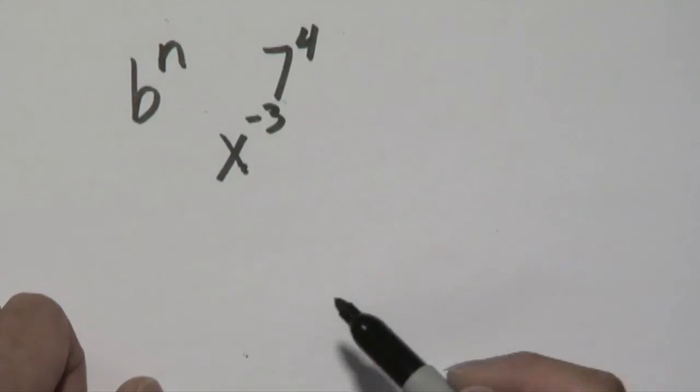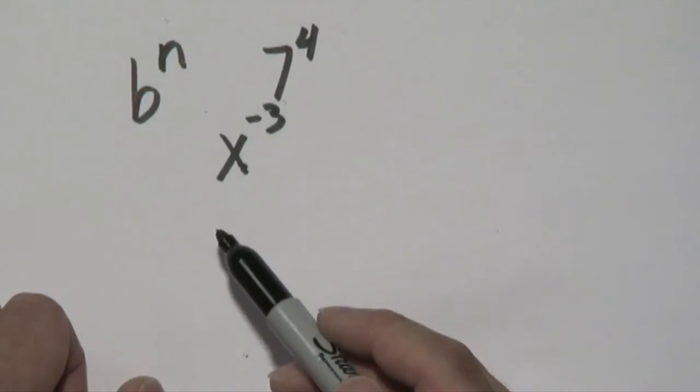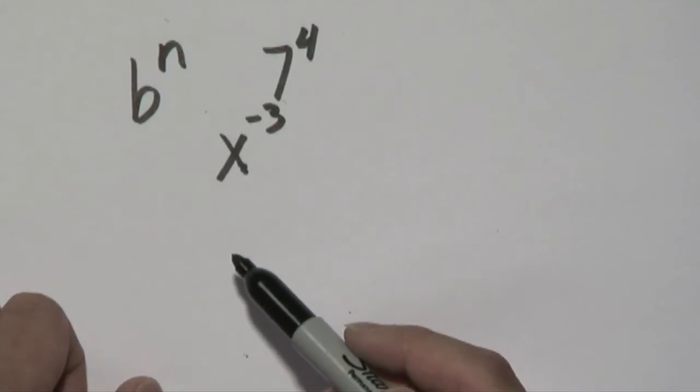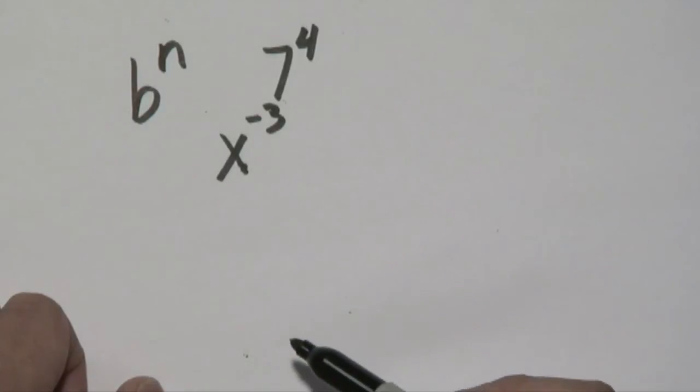Now typically what ends up happening is in words, the number that's mentioned first or the term that's mentioned first is your base, and what's mentioned afterwards is going to be the exponent.